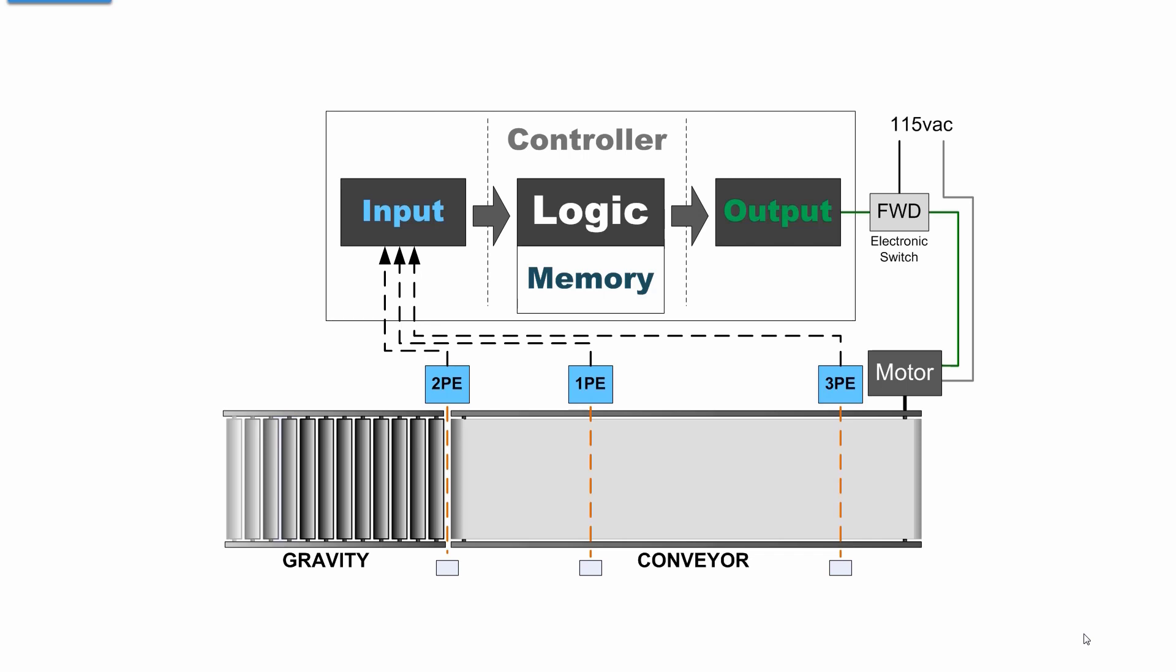Here we've expanded our input to three positions on the conveyor belt. A controller has to have a photoelectric sensor or some sort of sensor for every single position. Here we have three. So if we have a carton come down the gravity feed conveyor, 2PE, photo eye 2, tells the controller that there is a carton available to come onto the conveyor. At that point, the conveyor can then pull the carton onto the conveyor until it blocks 1PE, photo eye 1, and then it stops.